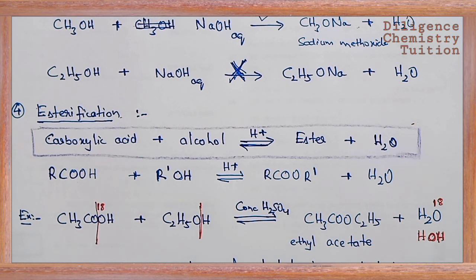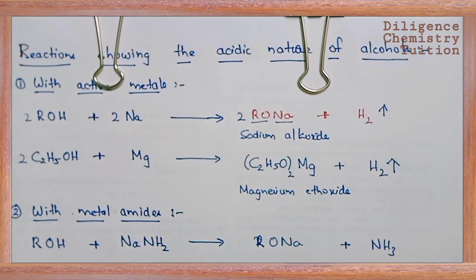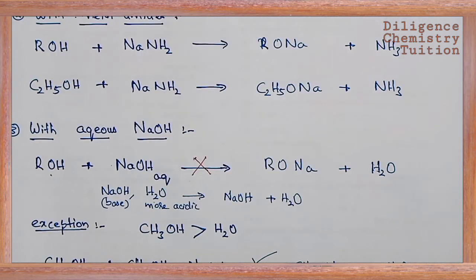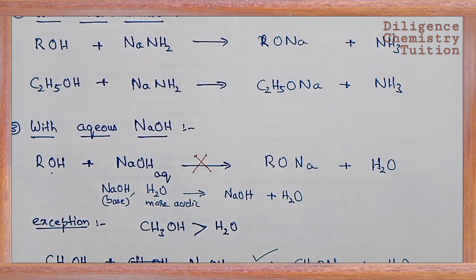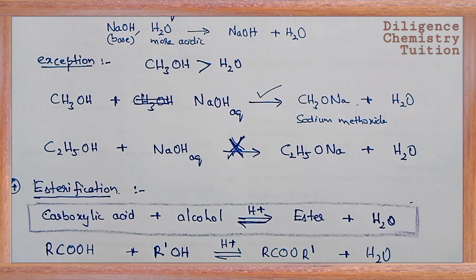So this covers esterification of alcohols with carboxylic acids. We have discussed four reactions involving the cleavage of the OH bond in alcohols. In the next video, we will discuss reactions involving the cleavage of the C-O bond.